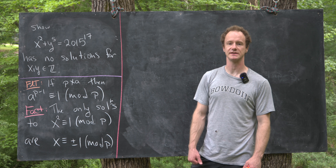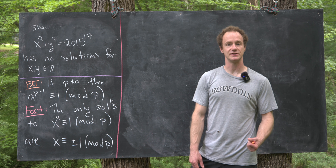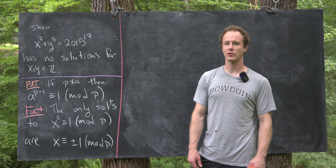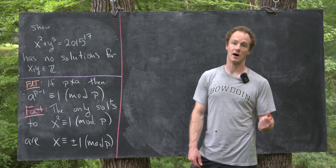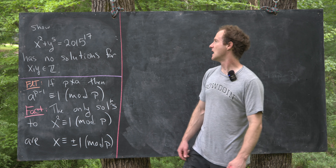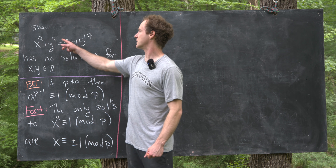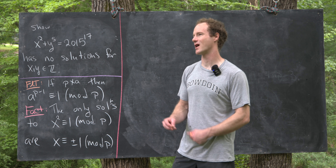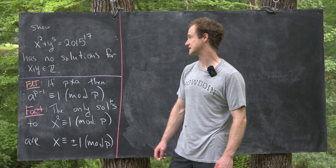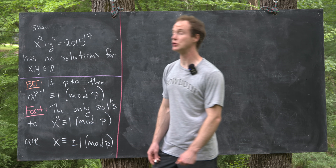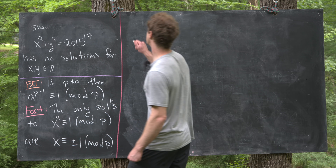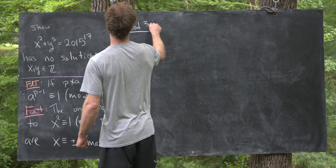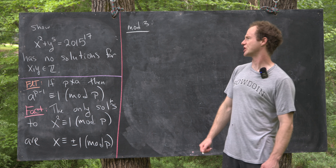Keeping in mind that we'd like to use Fermat's Little Theorem, you might think: what primes should we work mod? That really has to do with the exponents we see here — are any of these exponents 1 less than a prime? Well, in fact, 2 is 1 less than 3, so maybe our first guess would be to work mod 3.